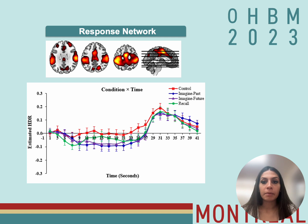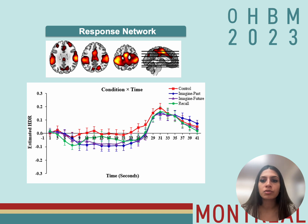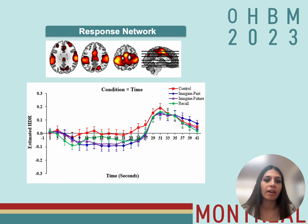A major finding that fMRI-CPCA provided was the derivation of the response network and the maintaining internal attention network. The response network has been shown to activate when individuals make a motor response, and in contrast during processes when individuals are trying to refrain from responding. This functional characterization was observed in our results, as the response network showed activation when participants were required to complete the rating scales by button press.